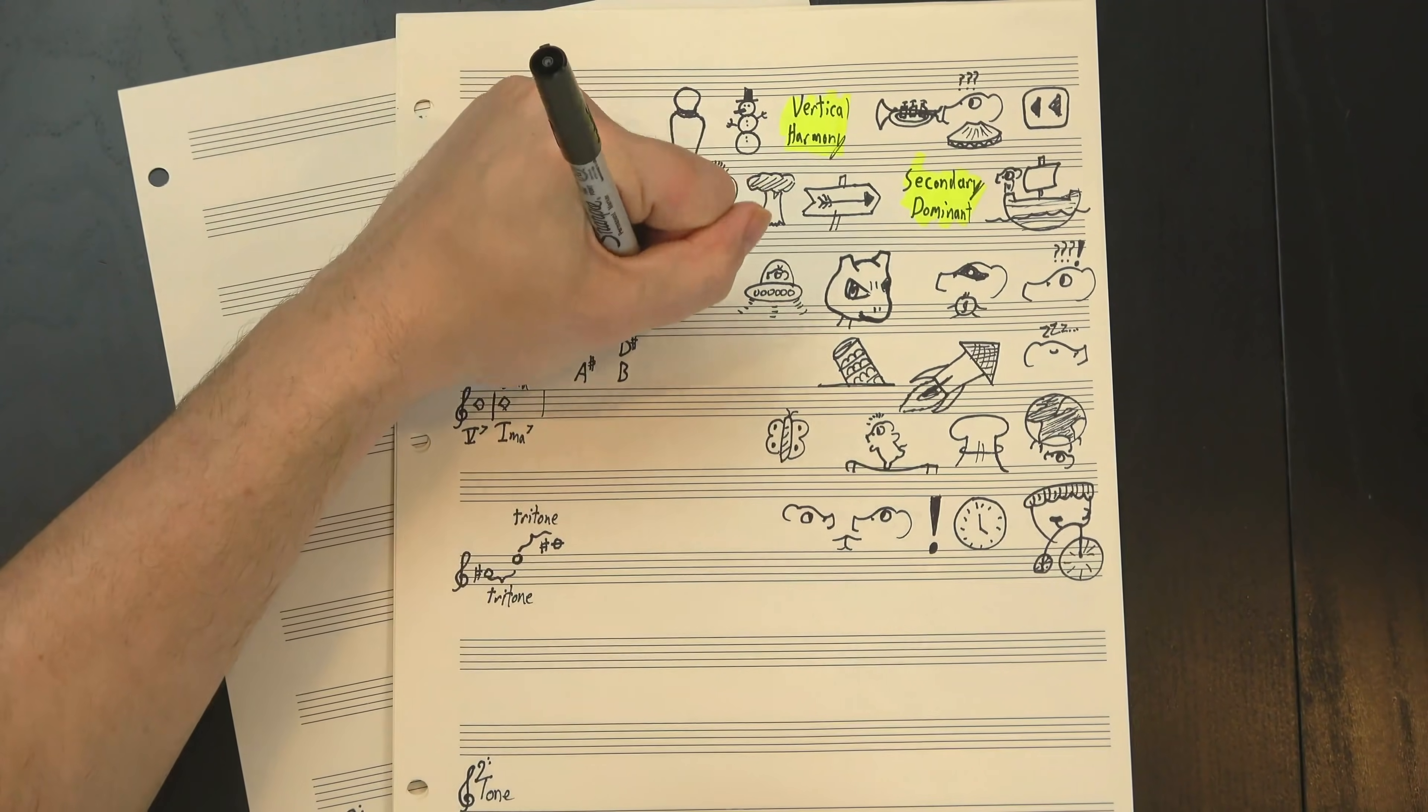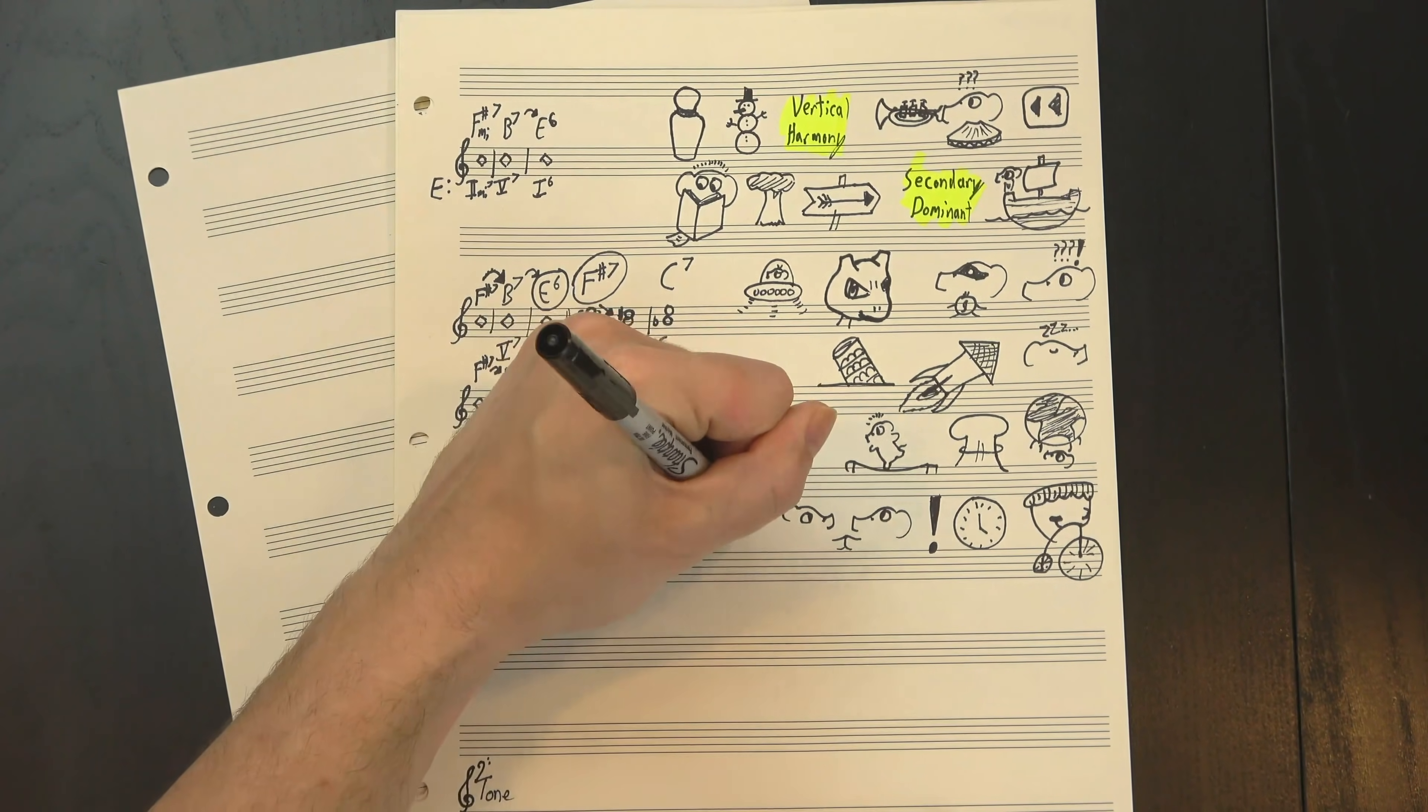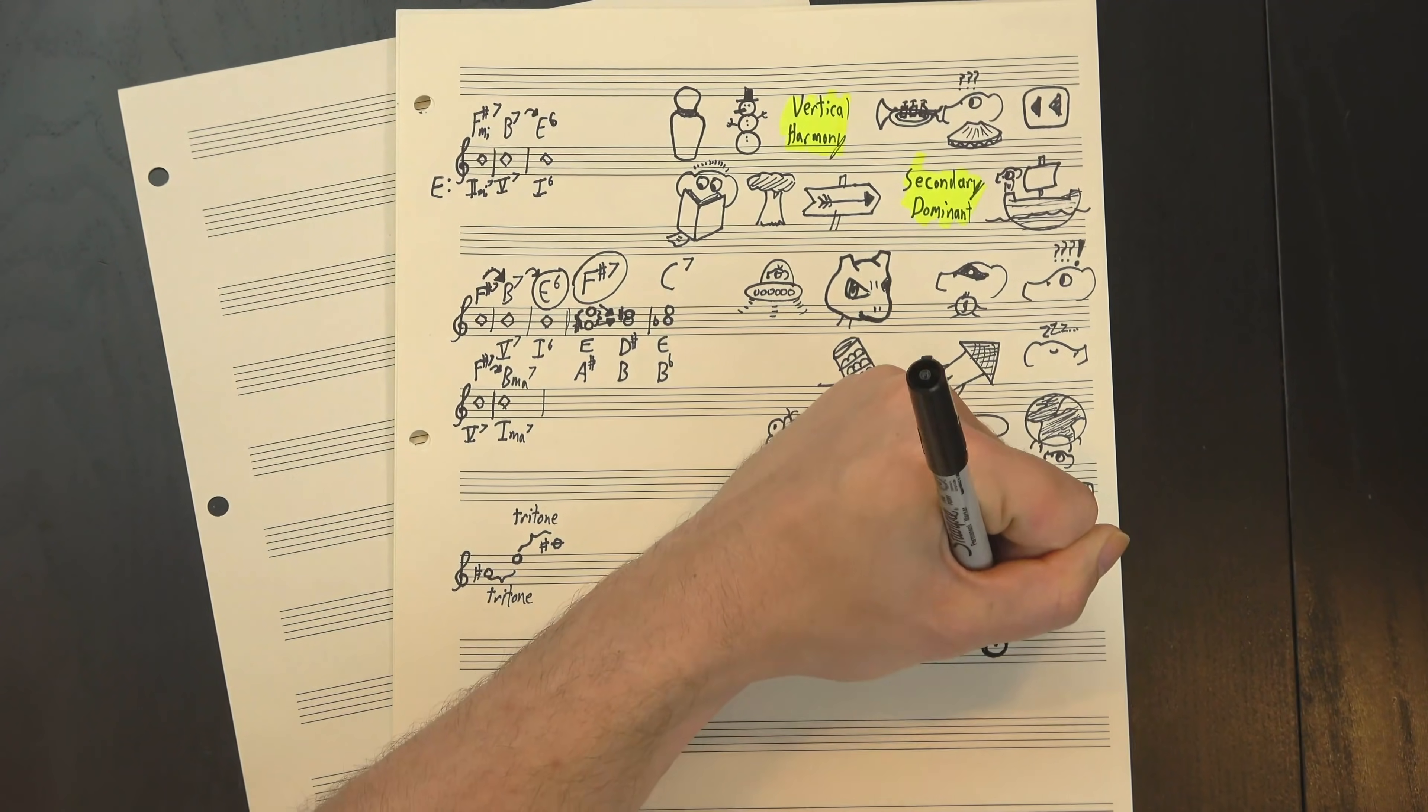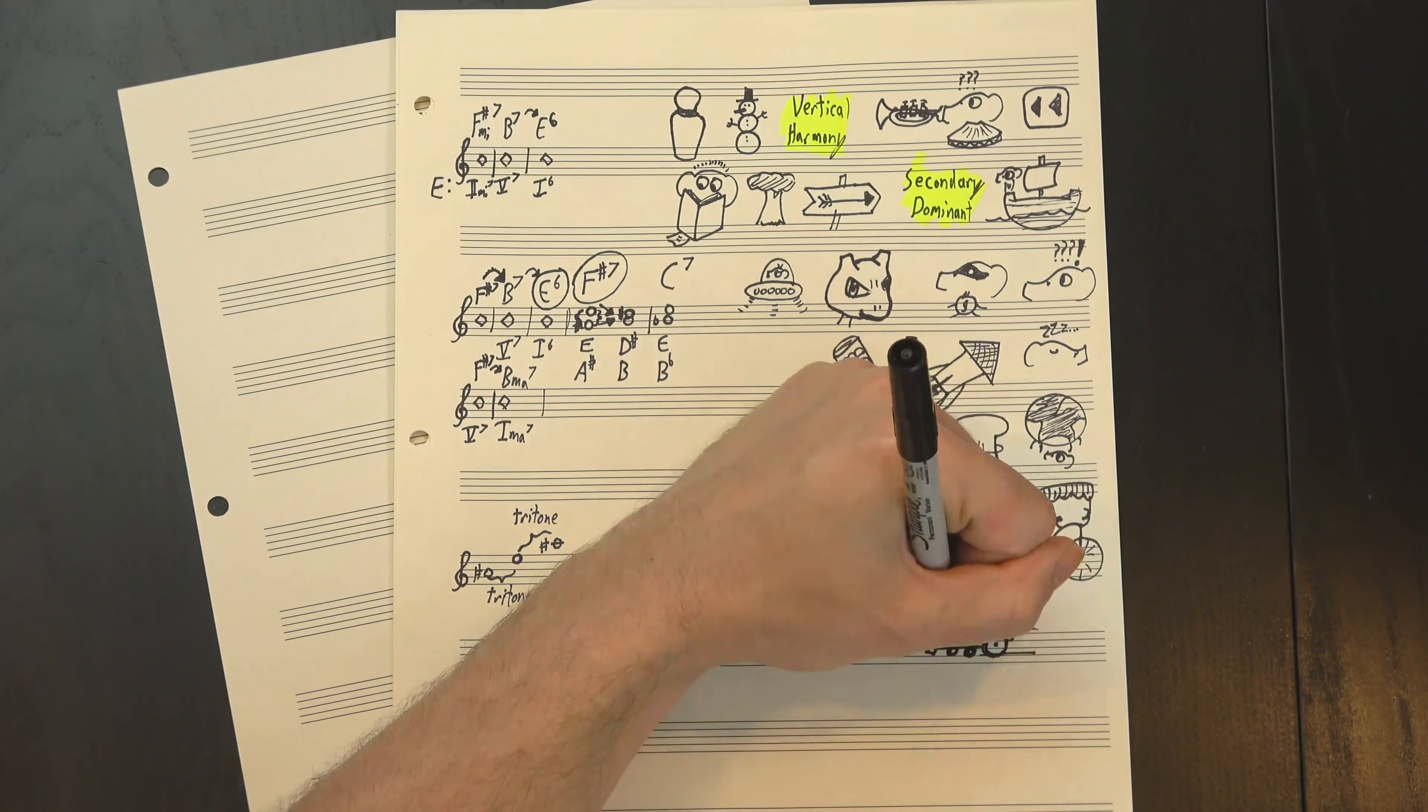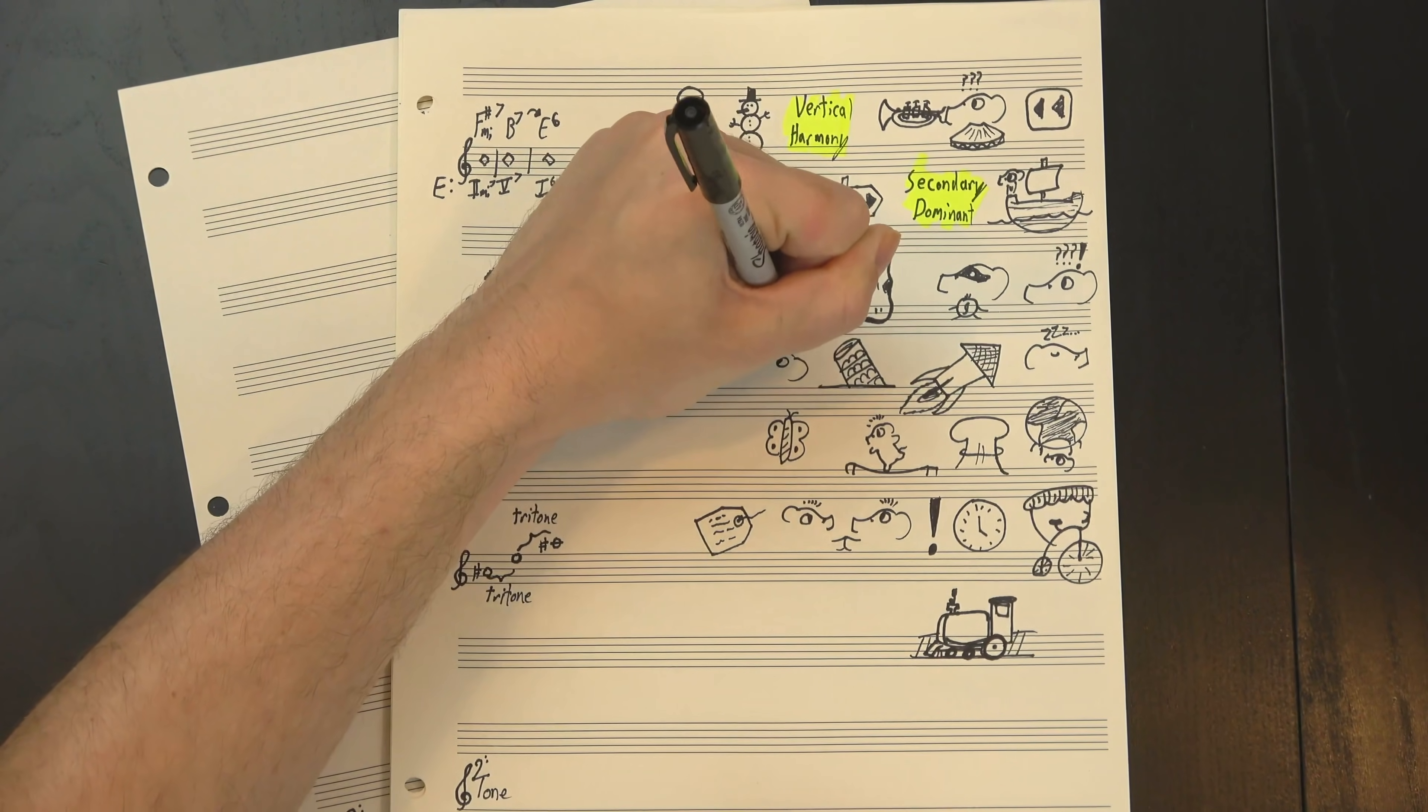In the case of F sharp 7, its tritone, A sharp to E, is shared with C7. Or, well, C7 calls the A sharp a B flat, but again, different names, same sound. So if F sharp 7's tritone is what's driving the resolution to B, and C7 has the same tritone, can C7 also resolve to B? Yep.